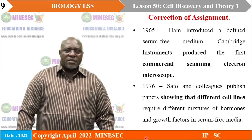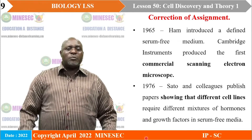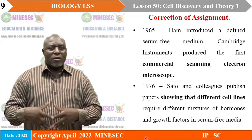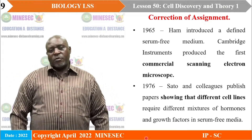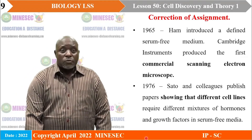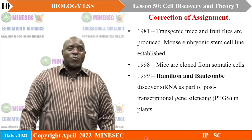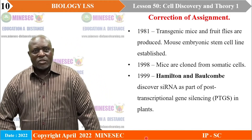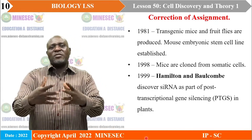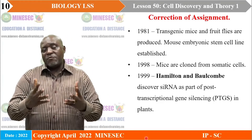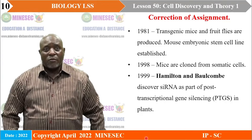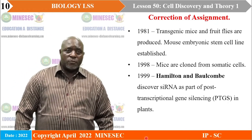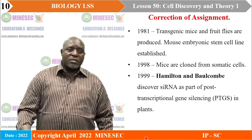In 1976, Sato and his colleagues published papers showing that differentiated cell lines require different mixtures of hormones and growth factors in serum-free medium. A lot of work has been done along this timeline. In 1981, transgenic mice and fruit flies were produced — transgenic mice produced as a result of biotechnology; they are producing transgenic mosquitoes now. Mouse embryonic stem cell lines were also established.